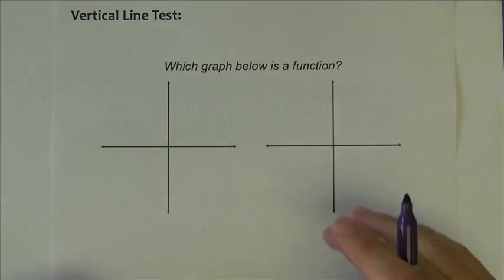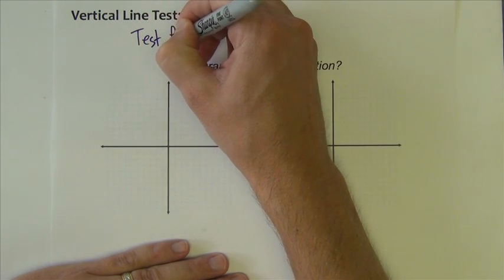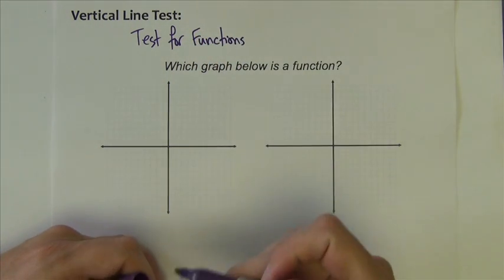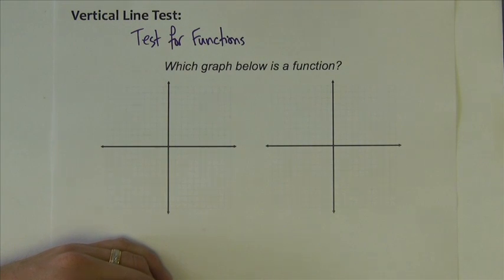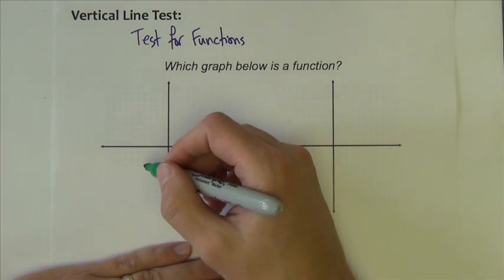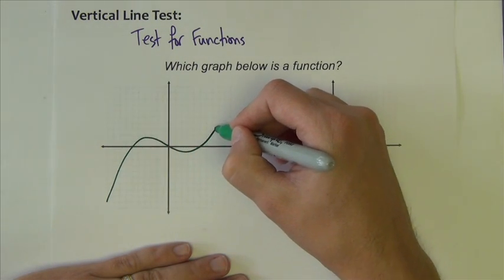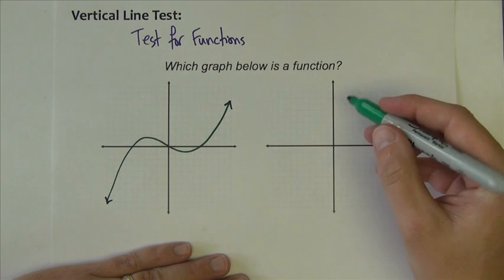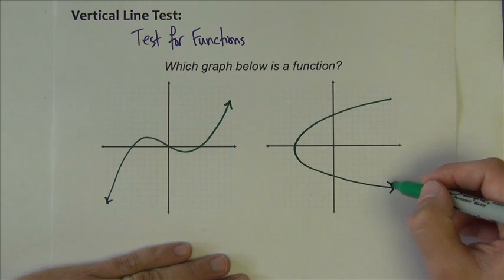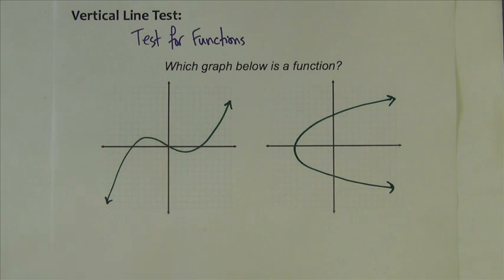You might have heard of this before, the vertical line test. Vertical line test is simply a test for functions. It's a test used to determine if what you're looking at is a function. So let me draw two things on the graphs below. On this one, let's draw something like this. On this one, how about I draw like that. One of these is a function, one of them is not a function.